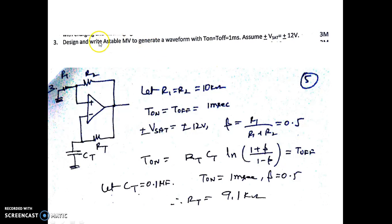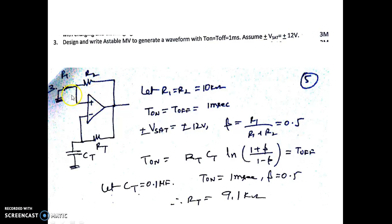The next question is: design and draw the astable multivibrator circuit to generate a waveform with T_on equal to T_off equal to 1 millisecond. Assume ±Vsat = ±12 V. This is a diagram of an astable multivibrator using an op-amp. We have Rt, Ct, and R1, R2 as the feedback network.